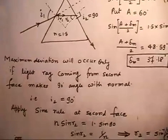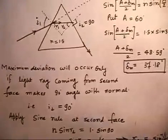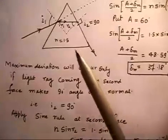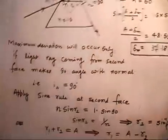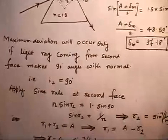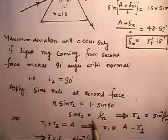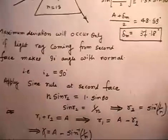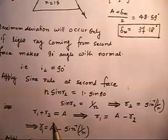If I apply Snell's law at the second face, I can write N times sin(R2) equals 1 times sin(90). That gives N times sin(R2) equals 1, so sin(R2) equals 1/N. Therefore R2 is equal to sin inverse of 1/N.